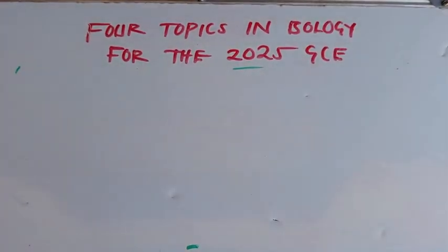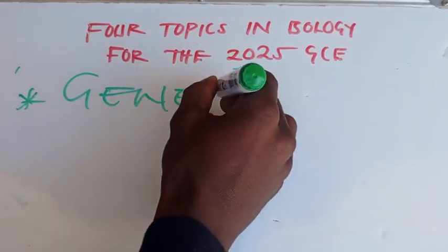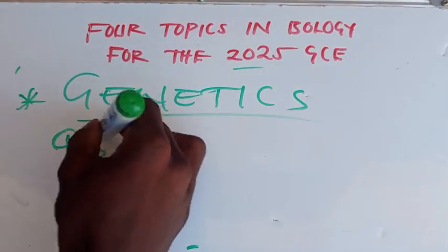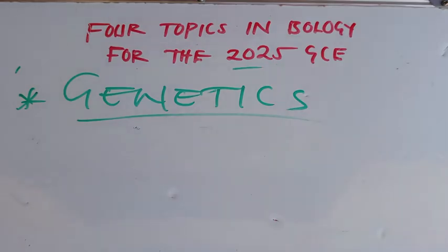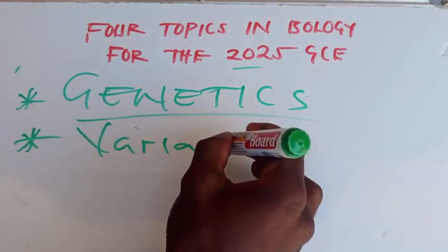The first topic is Genetics. This is an important topic — if you look at any biology Paper 2 and go to question number five, the question will be under genetics. I want you to revise this topic thoroughly so you can answer any genetics question. The first subtopic is variation.